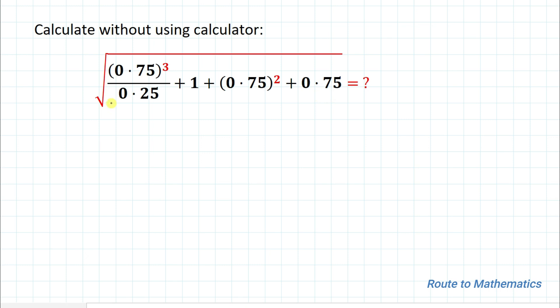Okay, so in the first step, let's just assume this total expression as x. So you can write x equals to 0.75 whole cube divided by 0.25 plus 1 plus 0.75 whole square plus 0.75.